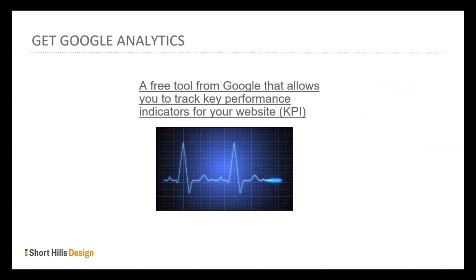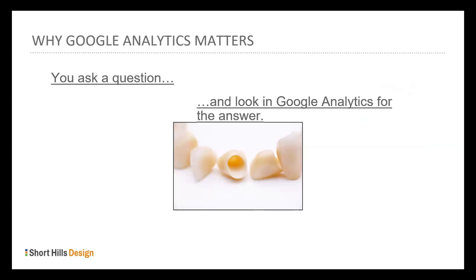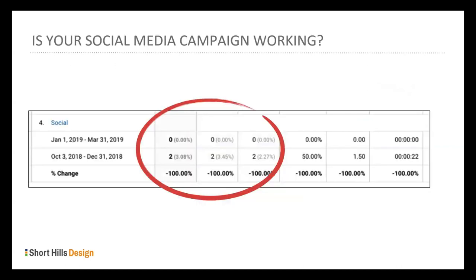You have to have Google Analytics. It's a free tool that lets you track key performance indicators. Every website should have it — if you don't have it, ask your web developer; it takes three seconds to install and it's invaluable. You ask a question and look in Analytics for the answer. For example, if you paid a lot for a social media campaign, Analytics might show two visitors from social in that time period — the campaign isn't working.